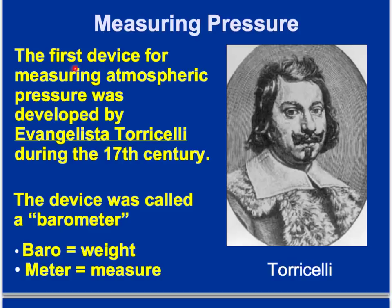The first device for measuring atmospheric pressure was developed by Evangelista Torricelli during the 17th century, and his device was a barometer. Baro means weight and meter means to measure, so he was basically measuring the weight of the air. His last name Torricelli gives us the unit of torrs as a measure of atmospheric pressure, which you'll see on worksheets in this unit.